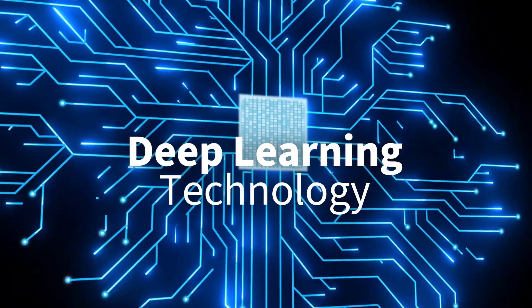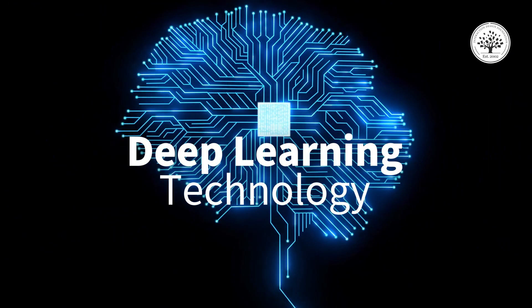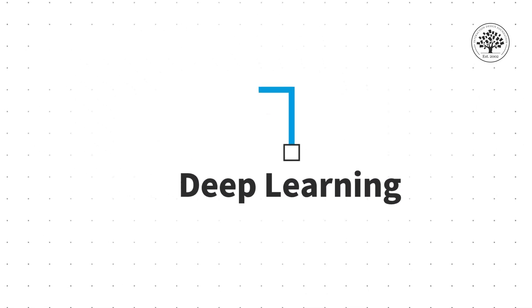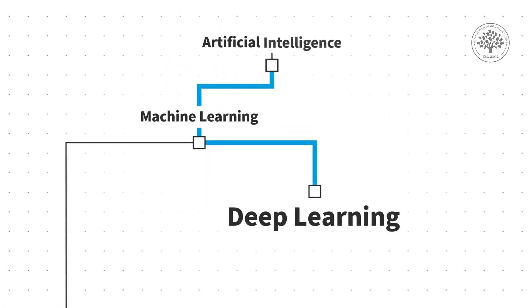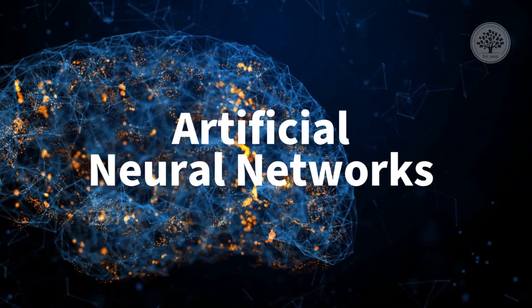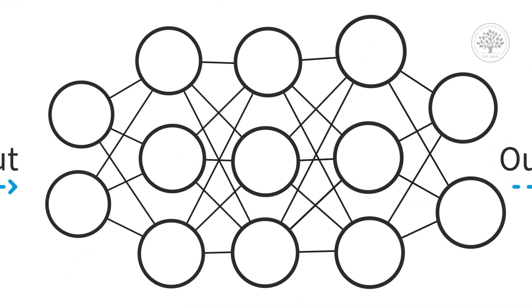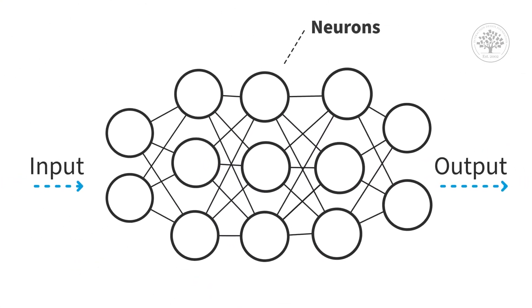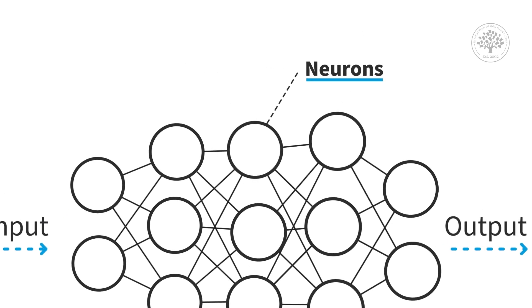Deep learning technology allows computers to simulate how our brains work. It is a subset of machine learning, a branch of artificial intelligence. Deep learning uses artificial neural networks that consist of multiple layers of nodes, also known as neurons, that can learn from large amounts of data.